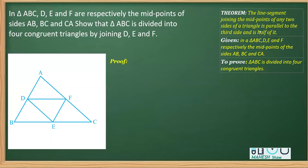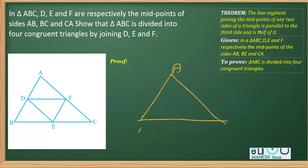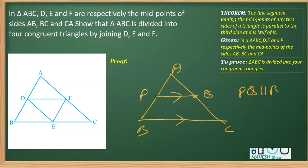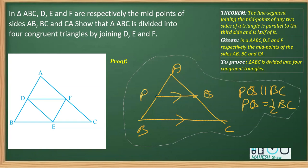In this video we are going to do a question based on the midpoint theorem. The theorem states that if you have a triangle ABC, the line joining the midpoints of two sides — say P is the midpoint of one side and Q is the midpoint of another side — then PQ will be parallel to BC and the length of PQ will be half of BC. That's the property we'll use for this question.